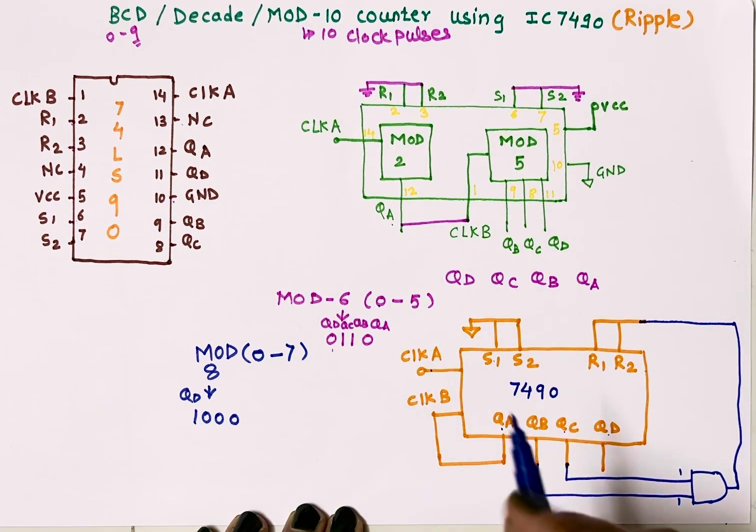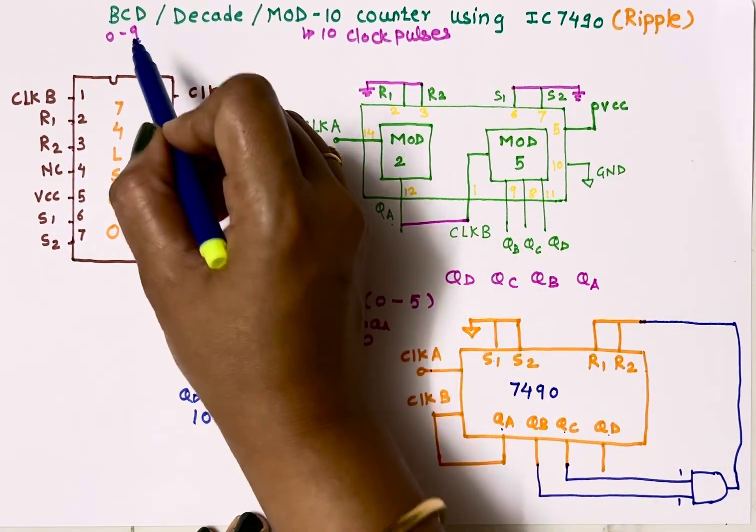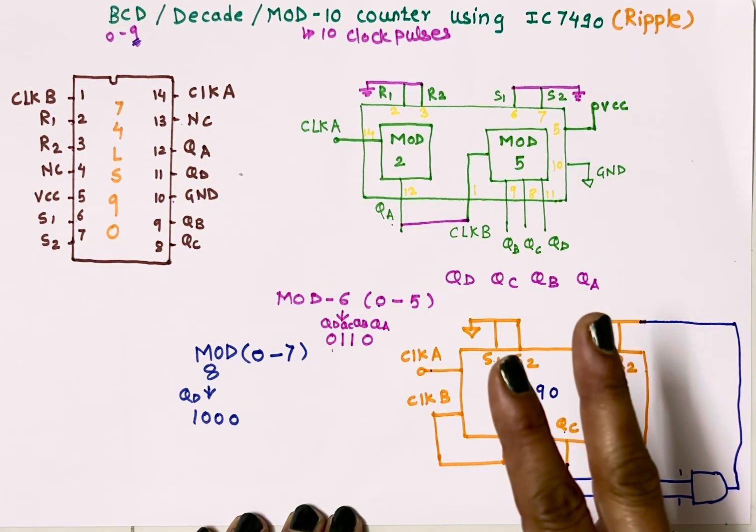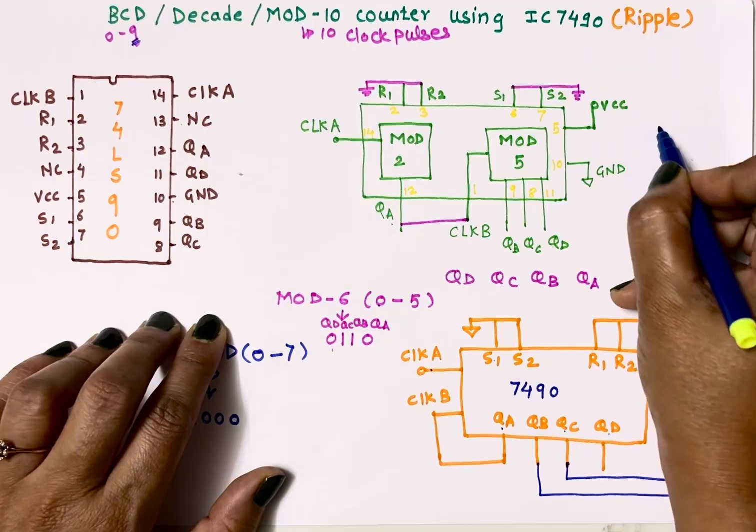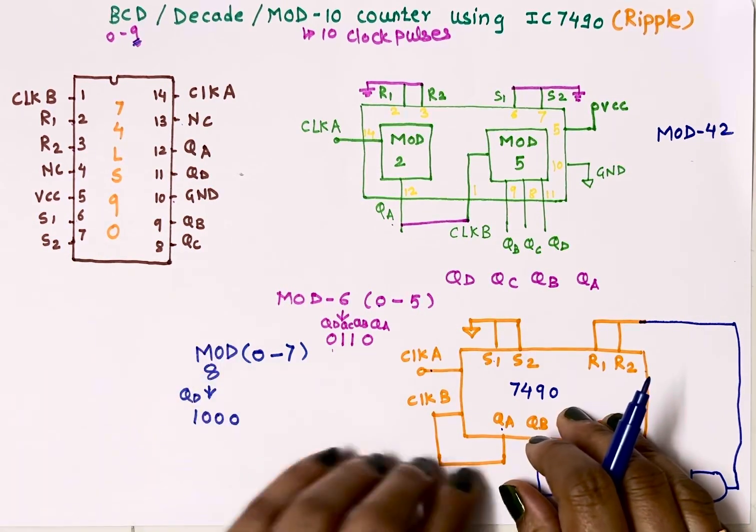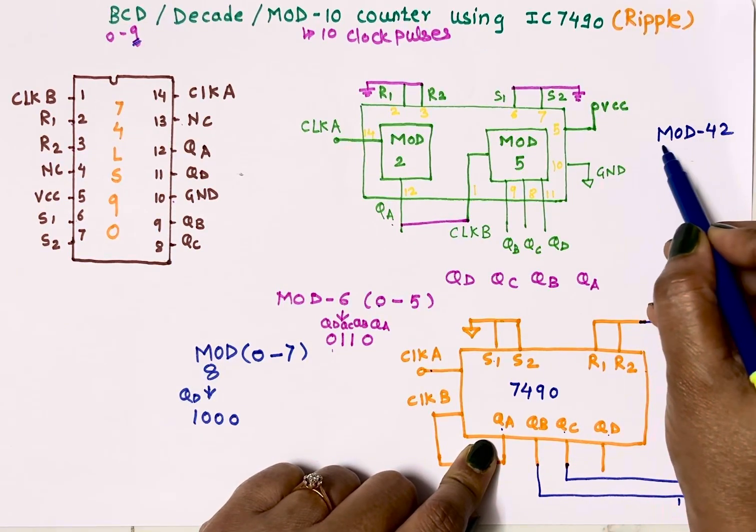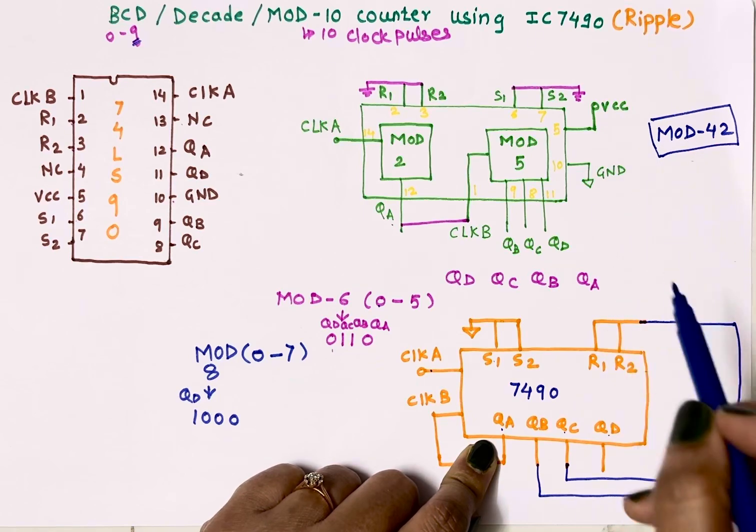One IC can count up to 9 only. Maximum count it can display is 9. To count more than 9 we need to take two ICs and I have implemented mod-42 counter using 7490. The separate video is uploaded on the channel, the link is given in the description box so you can see how to implement mod-N counter using IC 7490.